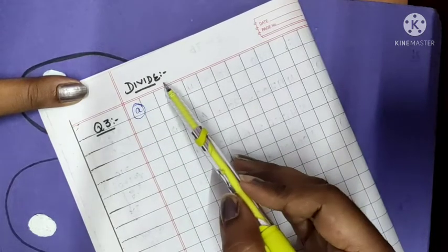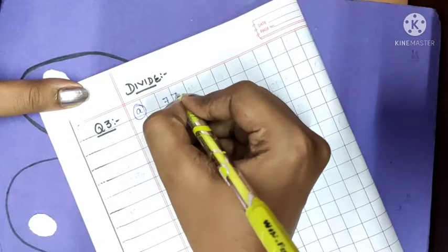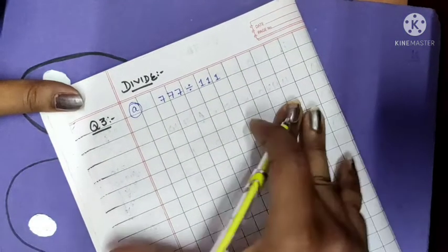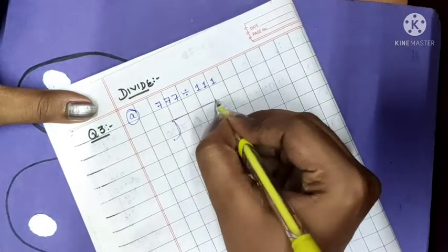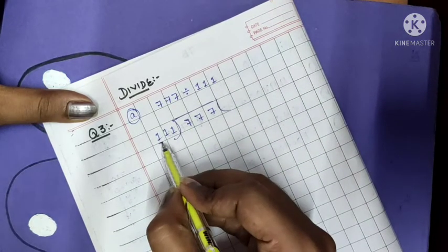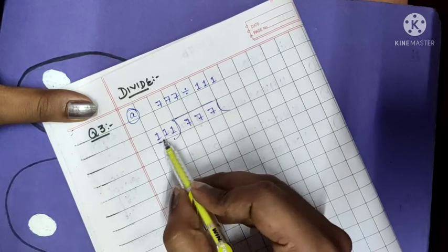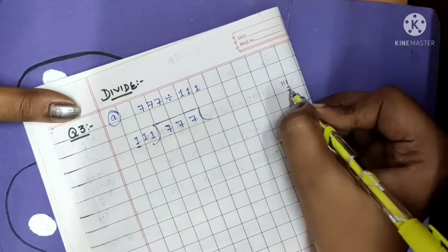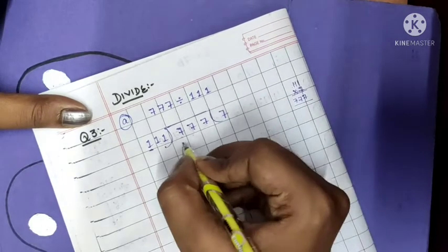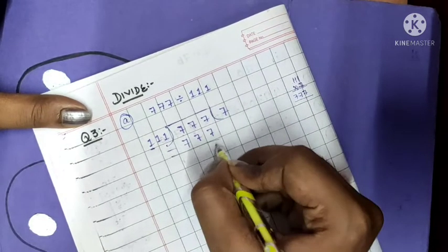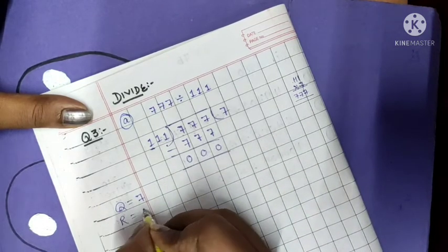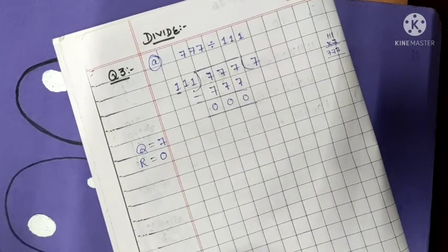Now come to question number 3. Divide part number A. 777 divided by 111. First of all the method is very simple. Arrange the digits. Now read the table of 1. 111 sevens are—it will become the same number. So we will write 7 sevens are 777. So it will give 0. So what will happen here? Quotient will become 7 and remainder will be 0. I hope this question is clear to you.